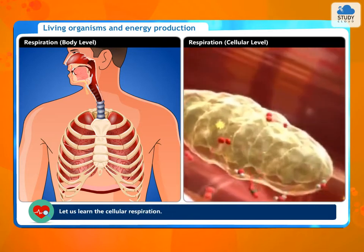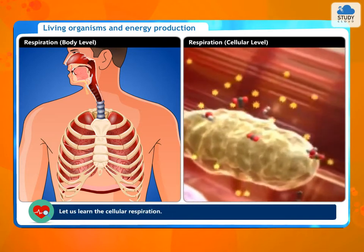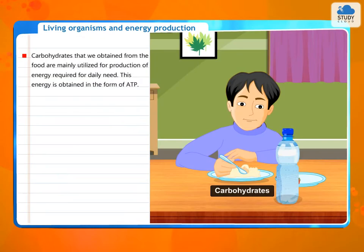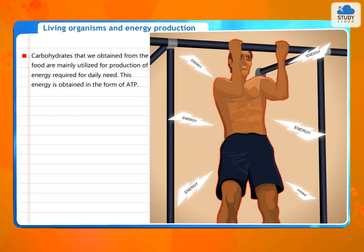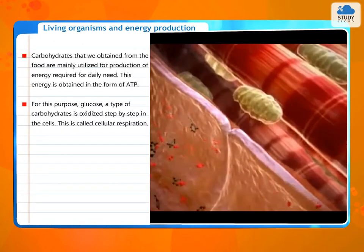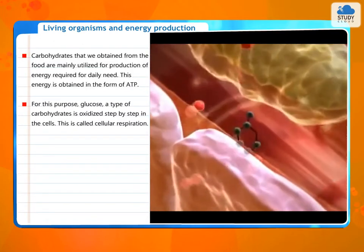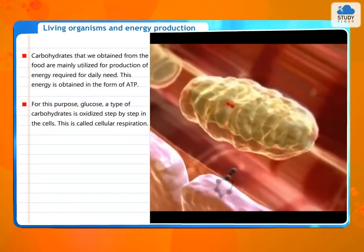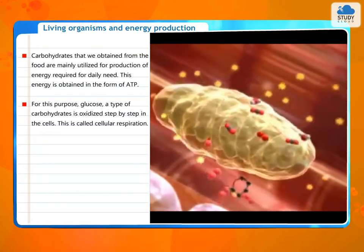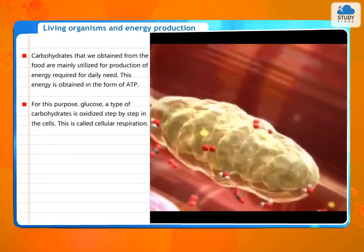Let us learn about cellular respiration. Carbohydrates that we obtain from food are mainly utilized for the production of energy required for daily needs. This energy is obtained in the form of ATP. For this purpose, glucose, a type of carbohydrate, is oxidized step by step in the cells. This is called cellular respiration.